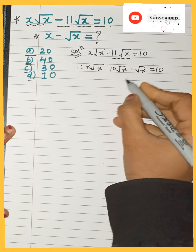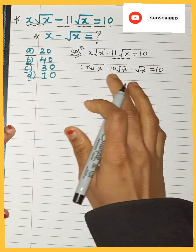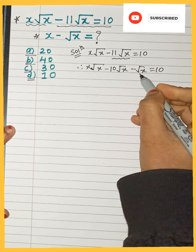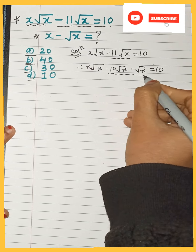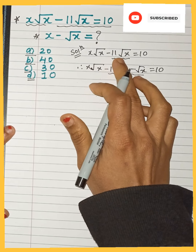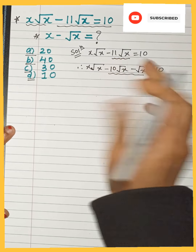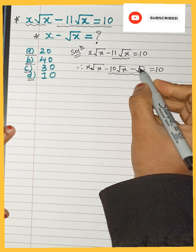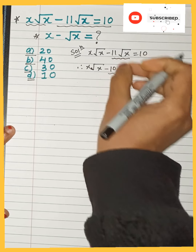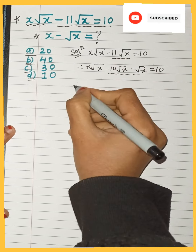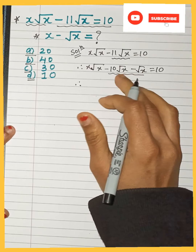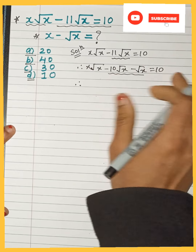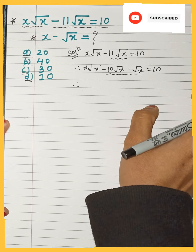We have split −11√x into two parts: −10√x and −1 times √x. If you combine both again you get −11√x. So in place of −11√x, I am writing −10√x minus 1 times √x.